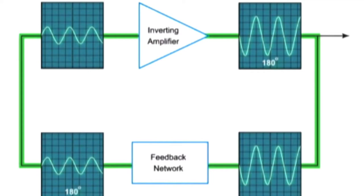Remember that the feedback network is frequency selective. Therefore, you only get one signal that will arrive back in phase.